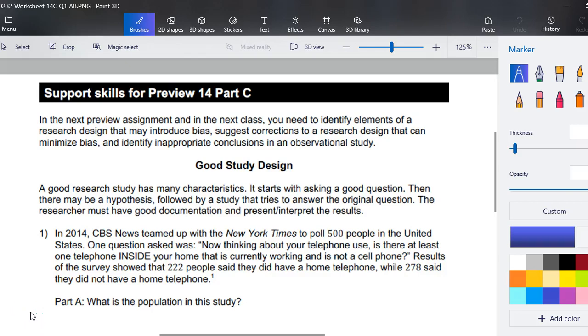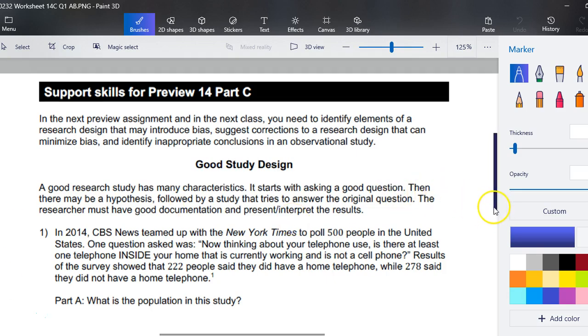So here we are, lesson 14c. In the next preview assignment and in the next class, you will need to clarify elements of a research design that may introduce bias, suggest corrections to a research design that can minimize bias, and identify appropriate conclusions in an observational study.